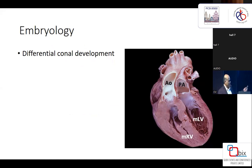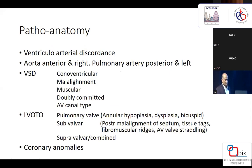From an embryological standpoint, we know that it involves persistence of subaortic conus and disappearance of subpulmonary conus. To understand what to assess preoperatively and how to choose, we should know about the pathoanatomy as well as the options available and their outcomes.